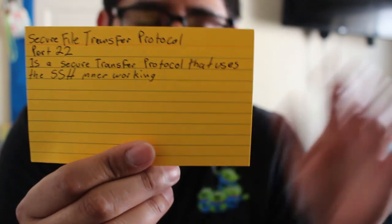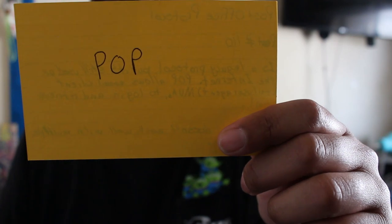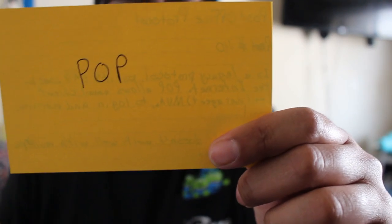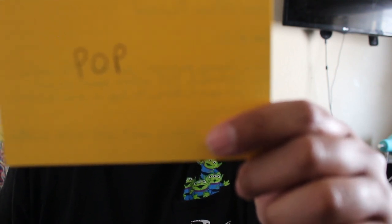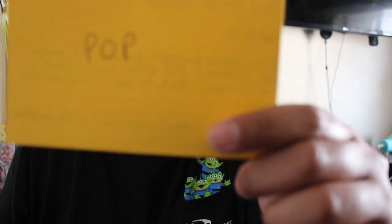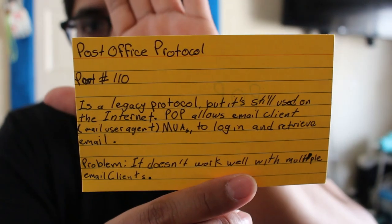Next is POP — Post Office Protocol — port number 110. It is a legacy protocol but it's still used on the internet. POP allows email clients, also known as mail user agents or MUA, to log in and retrieve emails. It doesn't work well with multiple email clients. Remember port number 110.